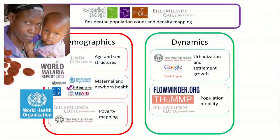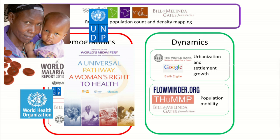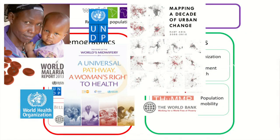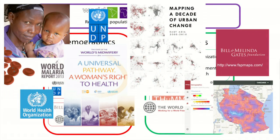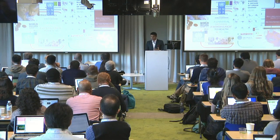One example is we've provided figures for the World Malaria Report 2013 for the WHO. We've also worked with the UNDP in producing sub-national maternal birth rates at very high resolution for their report. We also worked with the World Bank in mapping a decade of urban change for 27 countries in their East Asia and Pacific division using NASA and MODIS data — covering about 20% of the Earth's surface and 30% of the population. We also work with the Bill and Melinda Gates Foundation on mapping for financial planning for poor areas in different countries.